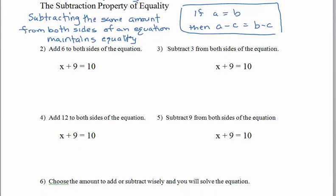Here we have an equation and we want to add 6 to both sides — both sides of the equal sign. On the right-hand side we add 6; on the left-hand side we add 6. Starting from x + 9 = 10, we already know x = 1. Adding 6 gives us x + 15 = 16. It's a new-looking equation, but x = 1 still solves it — both sides still have the value 16.